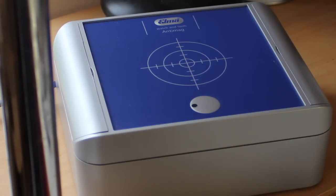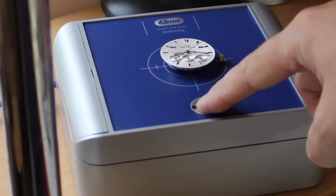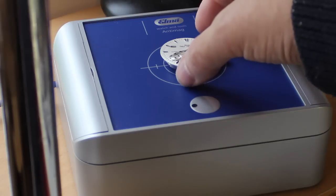Another type of demagnetiser, this one is electronic, a lot easier to use. You simply place the movement on the demagnetiser, press and hold the button and that is it.